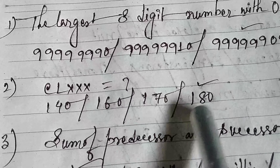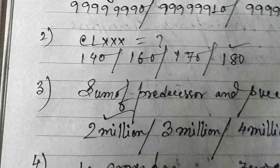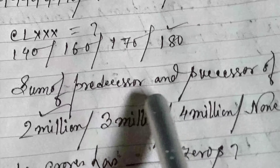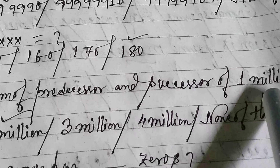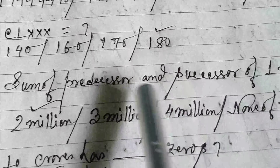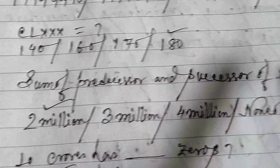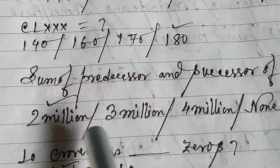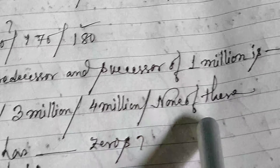Next: Roman numerals CLXXX — iska value kia hai? Options are 160, 140, 170, 180. The answer is 180.